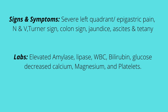The patient could also be jaundiced and could have ascites and tetany. Labs to monitor with this patient will be the amylase and lipase levels, which will be elevated. We'll also have an elevation of white blood cells, bilirubin, and glucose — since the pancreas produces insulin, which transports glucose from the blood into cells. We'll have a decrease in calcium, magnesium, and platelet levels.